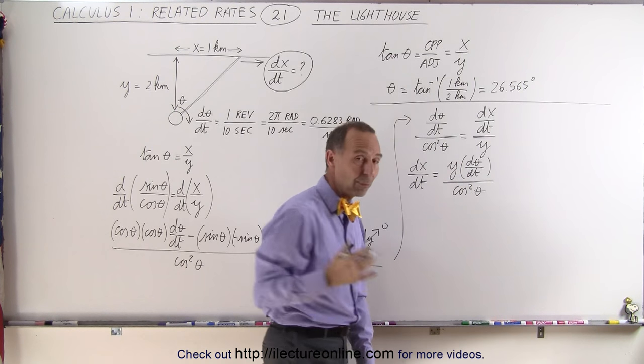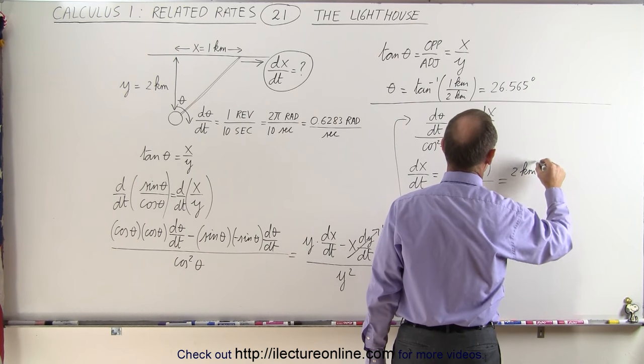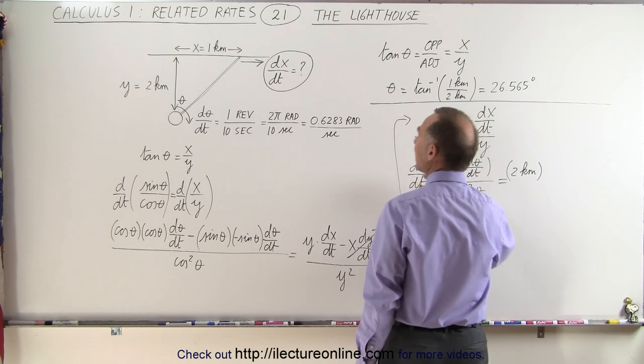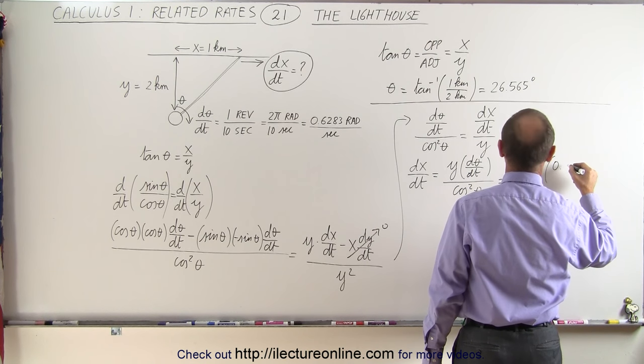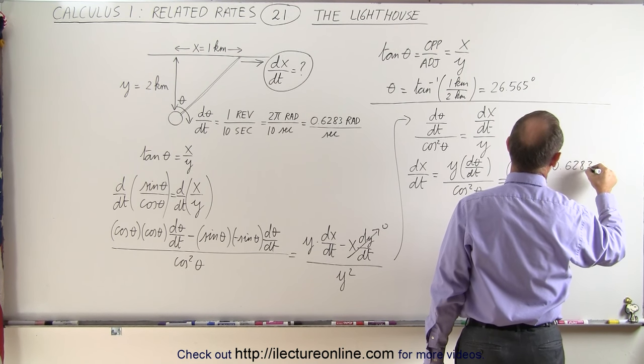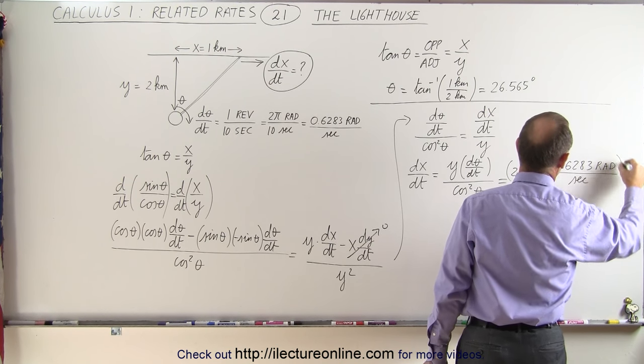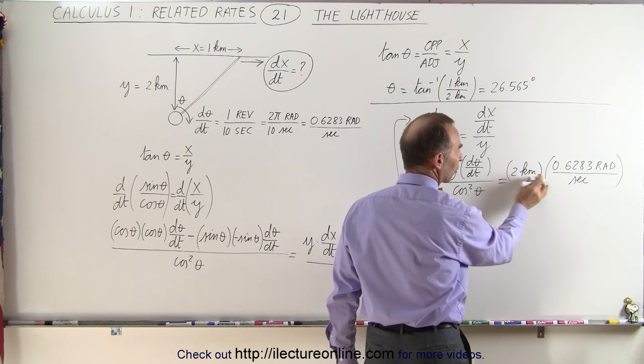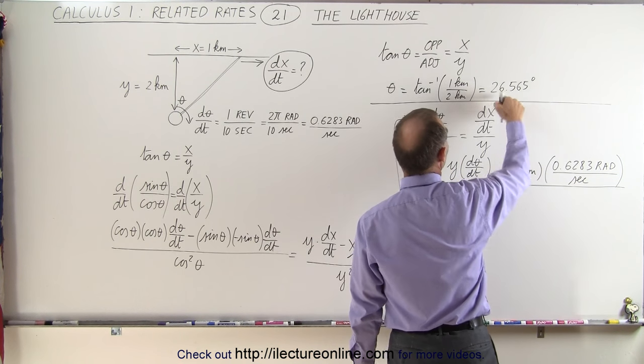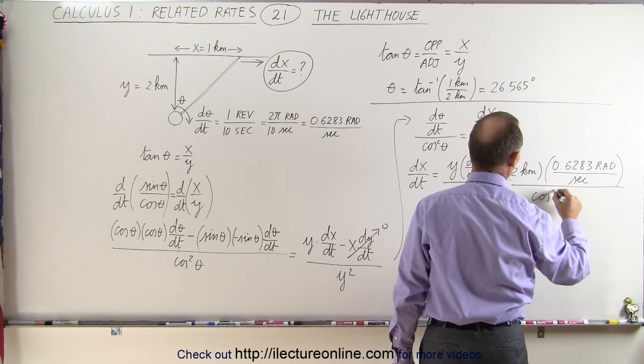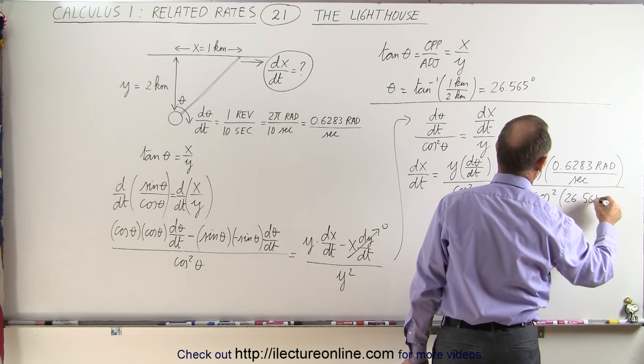Now we have everything we need to plug in the correct numbers. y was two kilometers. dθ/dt was given to us right here at 0.6283 radians per second. So notice in the numerator we're going to get kilometers per second because radians is a non-unit, divided by cos²(θ), and theta is 26.565 degrees.